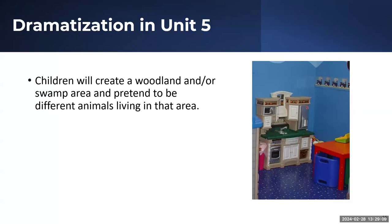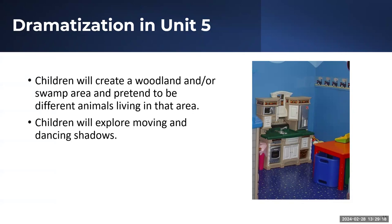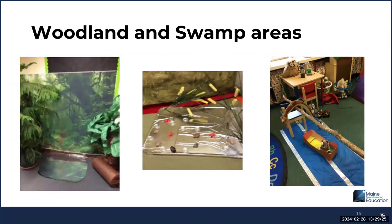In dramatization for Unit 5, children will create a woodland and/or swamp area and pretend to be different animals living in that area. They will explore moving and dancing shadows and pretend to go fishing. For the woodland and swamp areas center, connections will be made to Play With Me and Raccoon on His Own. Using knowledge gained from the stories, from research done in the library center, and even using paintings made in the art centers, students will create woodland or swamp areas, pretend to be different animals, use mylar for reflective surfaces, and make props and animal costumes.